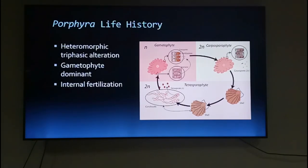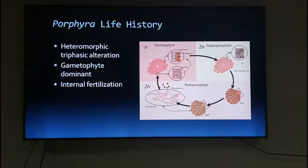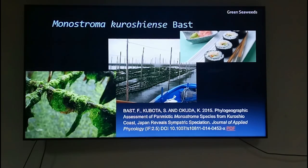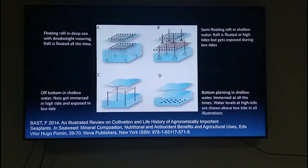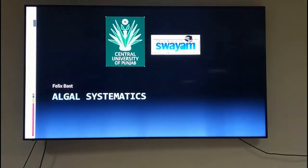Another highlight of this program is that we will be covering the life history of the most important algae, especially those which are commercially cultivated. For example, Porphyra — the most expensive algae in the world, because it is an edible alga and in high demand. Different life cycles of most commercially important algae will be covered. Also, different cultivation methods — offshore and onshore cultivation methods. What you see right now is Bonnemaisonia coroscience. We will explain thoroughly different methods of algae cultivation for students. So go ahead and take this course. It's called Algal Systematics, offered by the Central University of Punjab through the SWAYAM platform. Thank you.